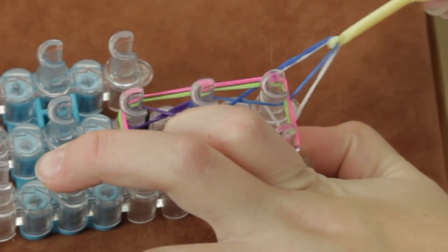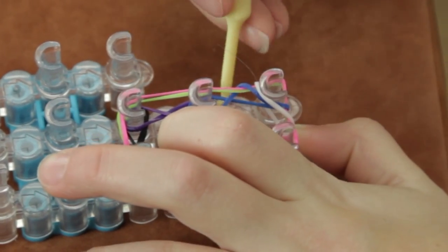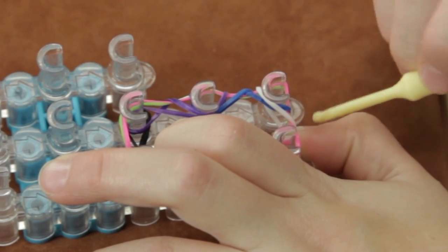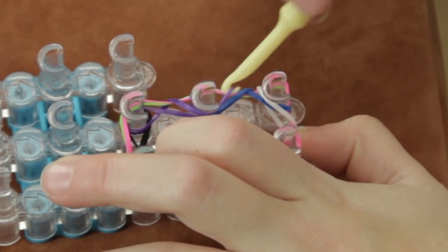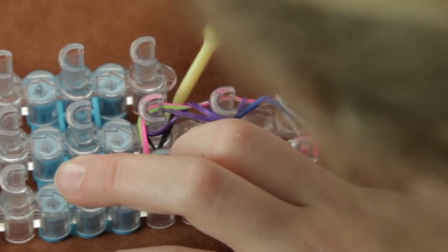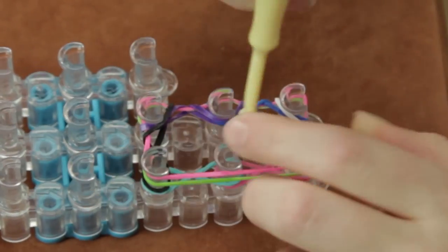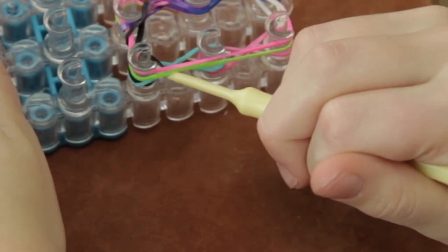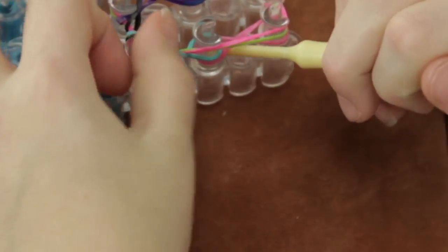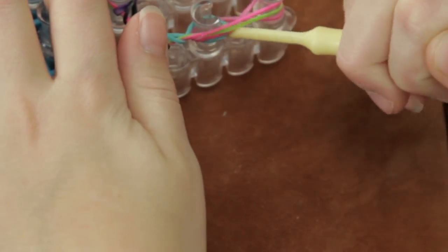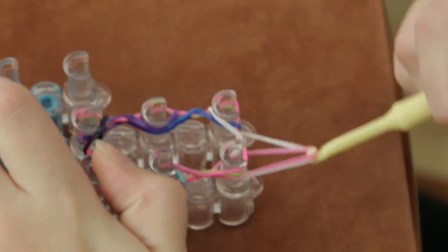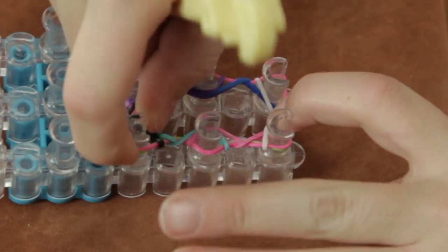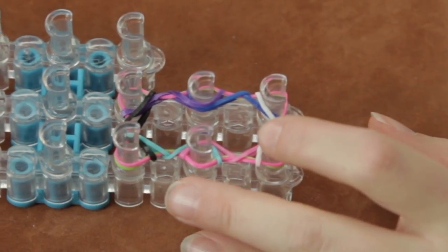And then you're going to take your hook, grab these two white ones and loop them over. This is blue and white, and then blue and purple. You're looping the two on the bottom that are twisted. Then you push them down and put on your next color rubber band.